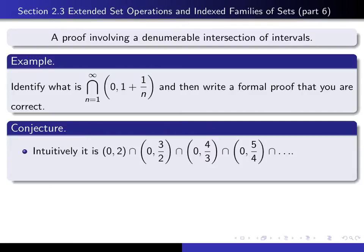What you're actually doing when calculating this intersection is finding the points common to every single one of the sets in this sequence. The intersection is typically smaller than any of the terms in the sequence. As you move from left to right, the sets get smaller in size. So when you intersect, you get fewer and fewer things. The right-hand endpoints are: 2, 3/2, 4/3, 5/4.